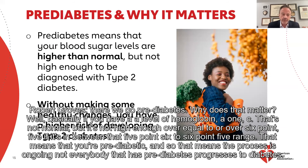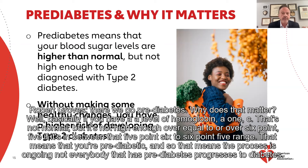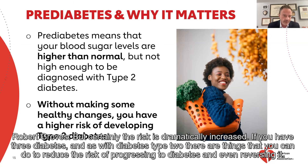Pre-diabetes — why does that matter? Basically, if you have a level of hemoglobin A1c that's not normal but not high enough — equal to or over 6.5 — if it's in between that 5.6 to 6.5 range, that means that you're pre-diabetic. That means the process is ongoing. Not everybody with pre-diabetes progresses to diabetes, but certainly the risk is dramatically increased if you have pre-diabetes.